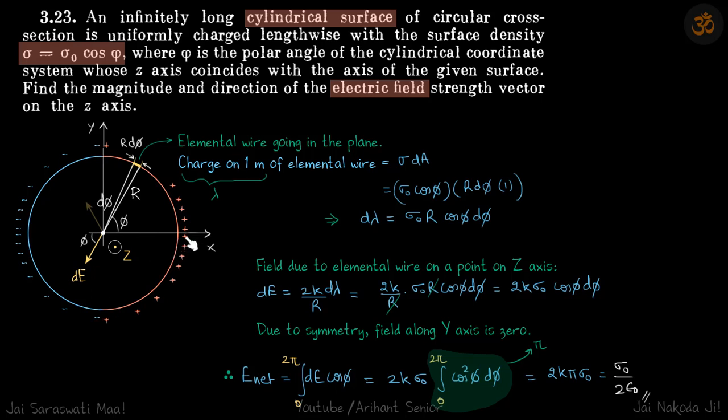Also charge buildup will be more when phi is zero, that will be maximum surface charge density and it should be zero when phi is 90 degrees. So charge distribution is going to look something like this. From symmetry you can already take a guess that field should be towards left.